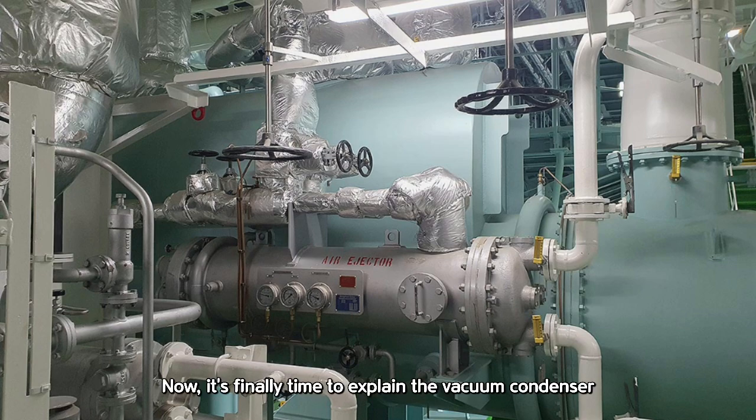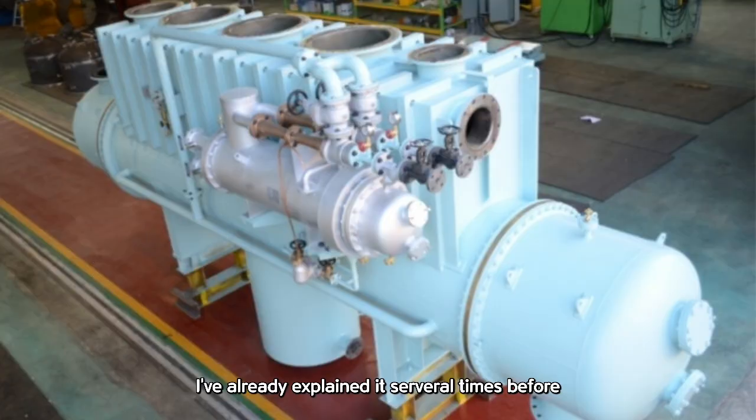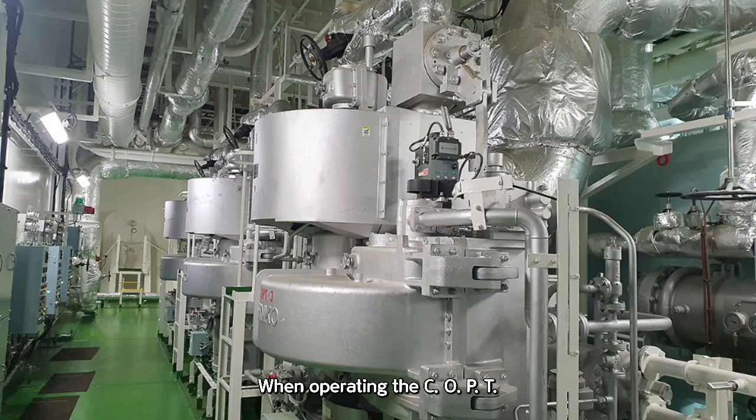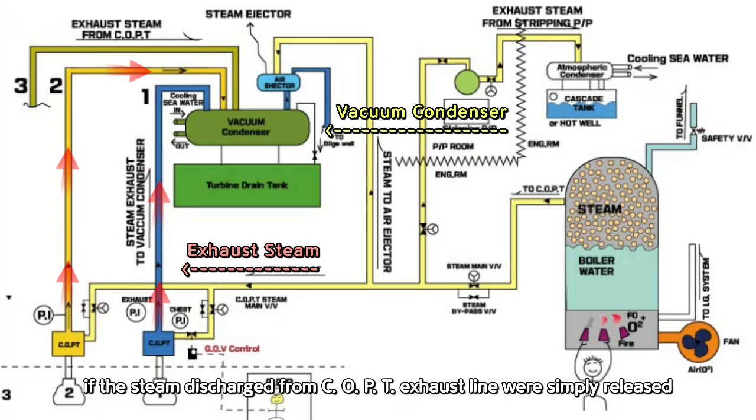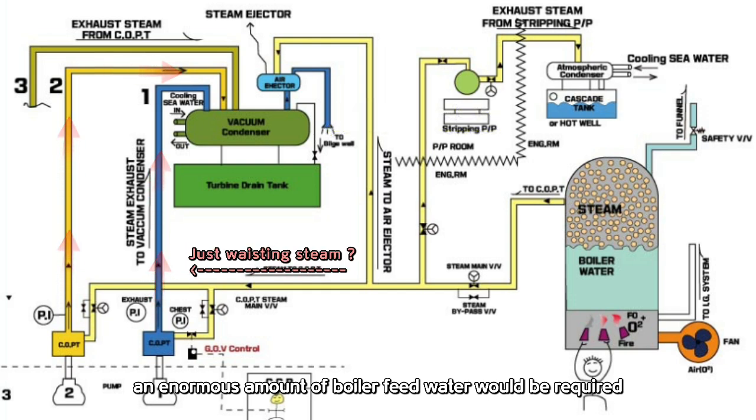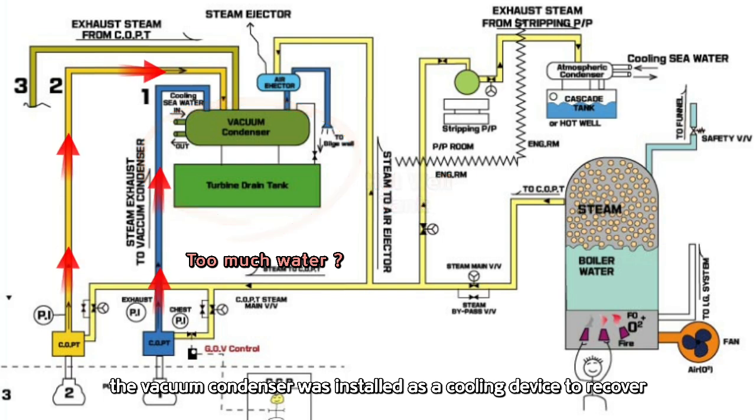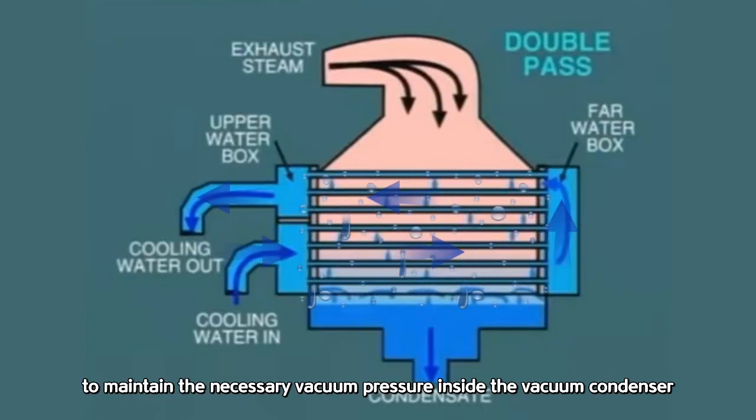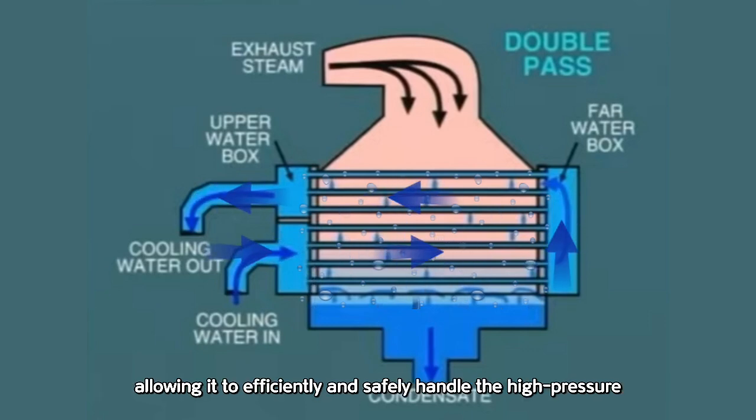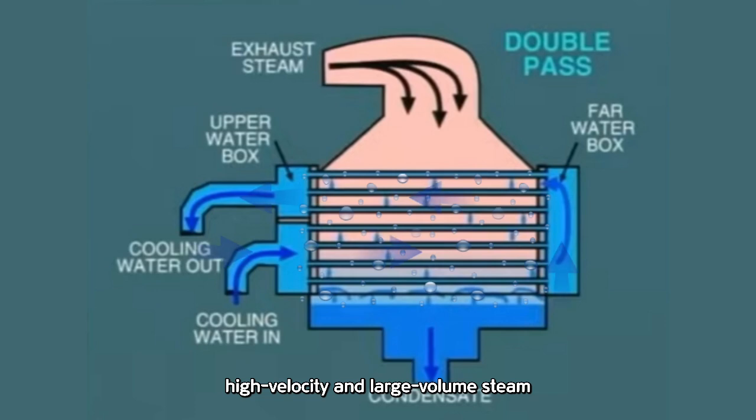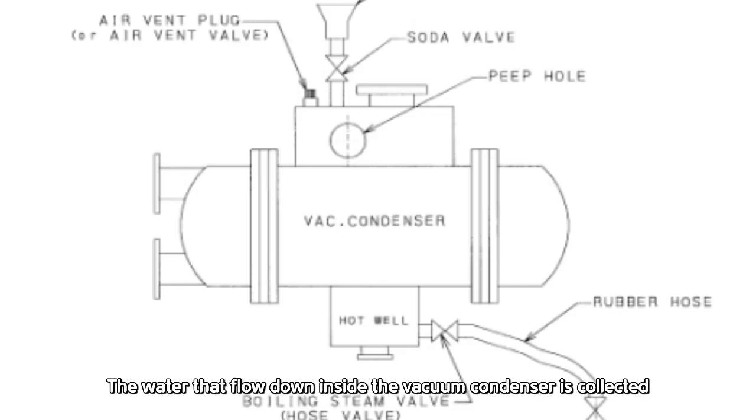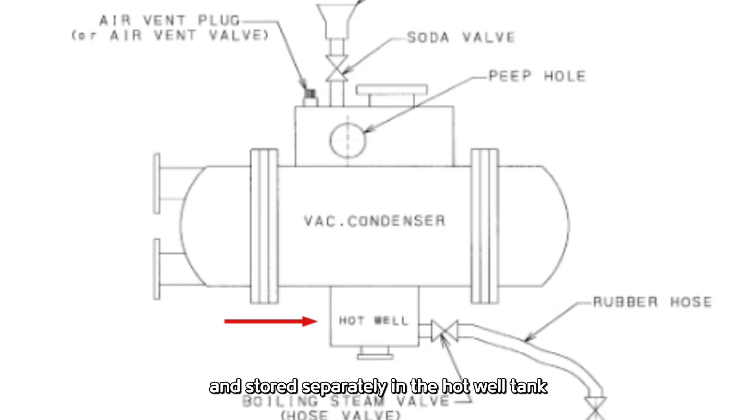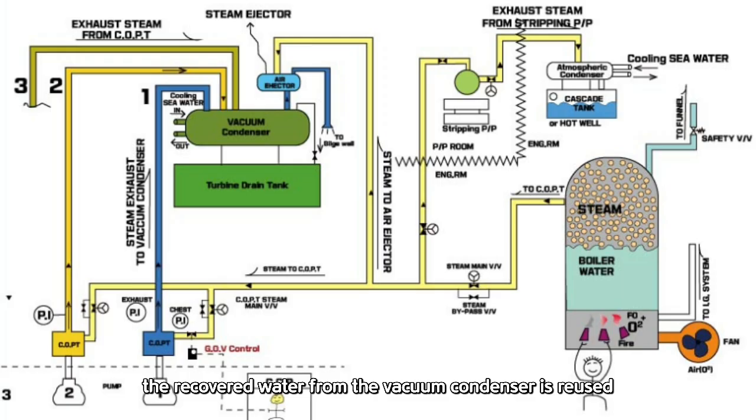Now it's finally time to explain the vacuum condenser, which is attached to the steam ejector like a parent and child. I've already explained it several times before, but let's go over it once more. When operating the COPT, if the steam discharge from COPT exhaust line were simply released, an enormous amount of boiler feed water would be required. To prevent this, the vacuum condenser was installed as a cooling device to recover and store the used steam, allowing it to be recycled as boiler feed water. When operating the COPT, the steam ejector is used to maintain the necessary vacuum pressure inside the vacuum condenser, allowing it to efficiently and safely handle the high pressure, high velocity, and large volume steam discharged from the COPT exhaust line. This system uses seawater for cooling, ensuring smooth and stable operation. When high temperature steam is cooled, it naturally condenses into water droplets. The water that flowed down inside the vacuum condenser is collected and stored separately in the hot well tank. Later, when additional boiler water is needed for the operating boiler, the recovered water from the vacuum condenser is reused.